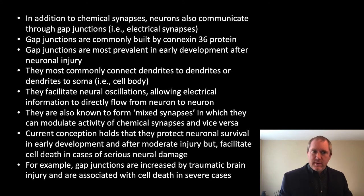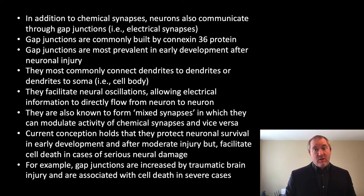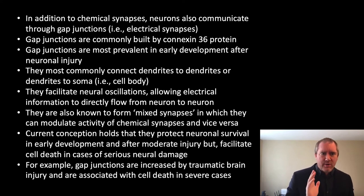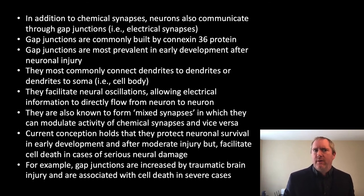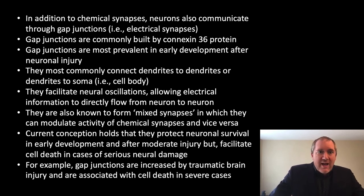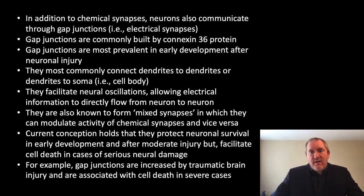In summary: in addition to chemical synapses, neurons also communicate through gap junctions or electrical synapses. Gap junctions are most commonly built by Connexin 36. From an old lab I worked in, we demonstrated that pharmacologically manipulating Connexin 36 in the striatum — where dopamine is present — can alter things like cocaine self-administration. So this isn't only about injury or development; a lot of these things have widespread functions. Gap junctions are most prevalent in early development and after neuronal injury. They most commonly connect dendrites to other dendrites, or dendrites to the soma itself. They facilitate neuronal oscillations, allowing electrical information to directly flow from one neuron to another.